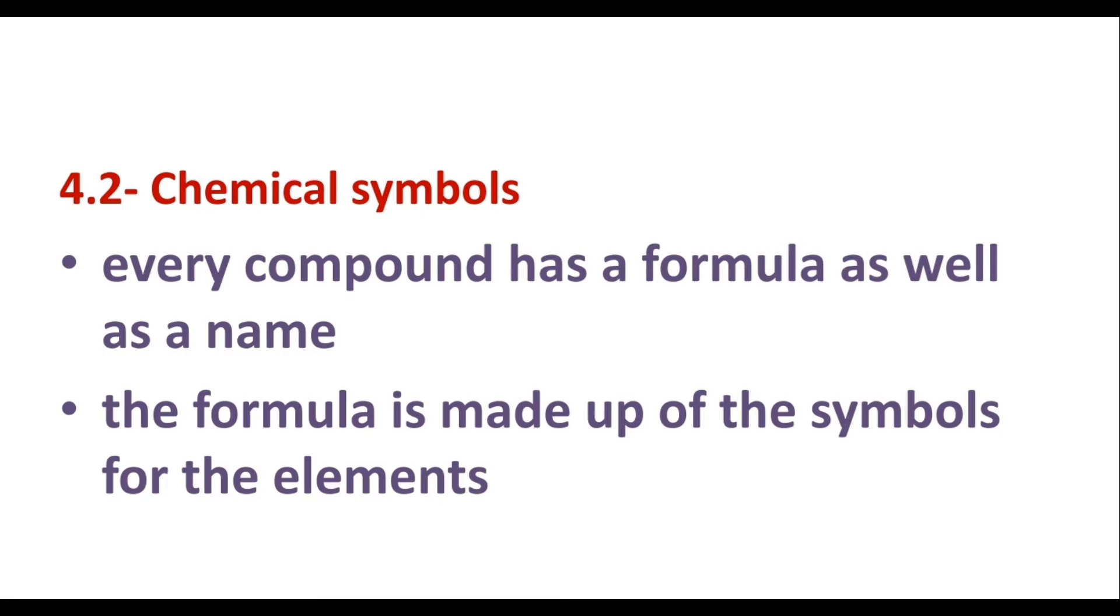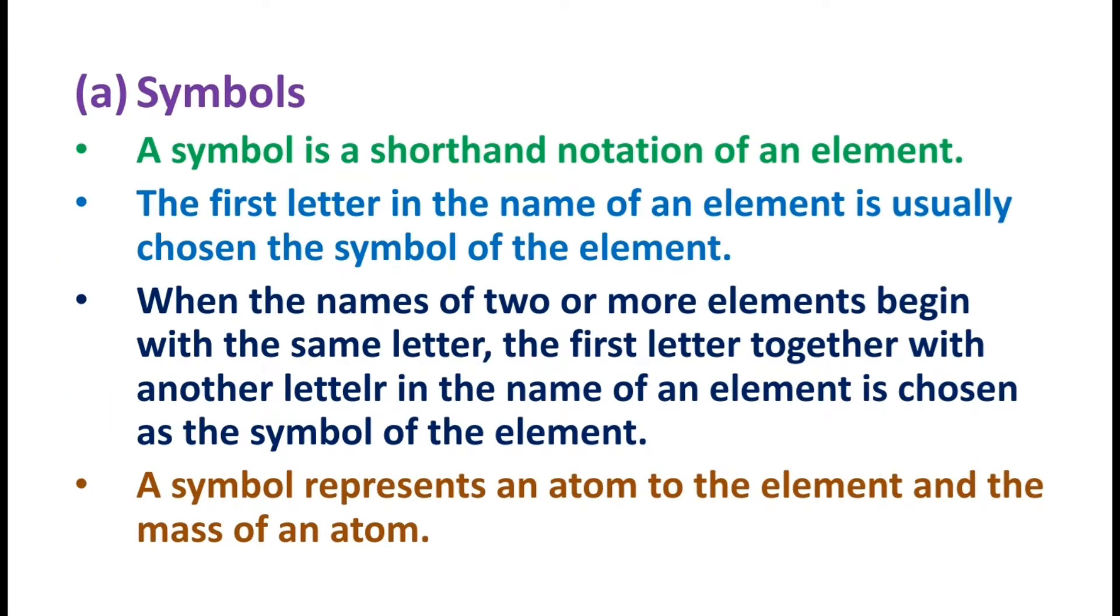Chemical symbols are very important. Every compound has a formula as well as a name. The formula is made up of the symbols for the elements. A symbol is a shorthand notation of an element.